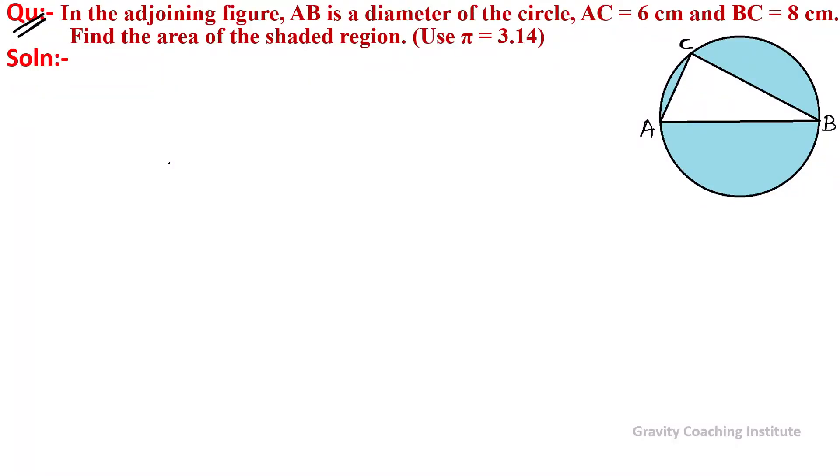In the adjoining figure, AB is a diameter of the circle, AC = 6 cm and BC = 8 cm. Find the area of the shaded region. This question involves finding the area of the triangle. Given AC is 6 cm and BC is 8 cm.